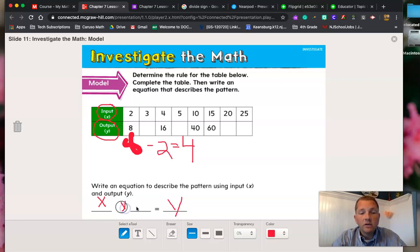Let's put a multiplication symbol in here. x times four equals y. Let's see if that holds true over here. Let's do three times four is going to give me, what's three times four? Yeah, it's twelve.